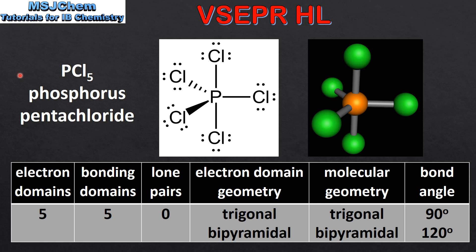Our first example is PCl5, which is phosphorus pentachloride. By looking at the Lewis structure we can see there are 5 electron domains around the central atom. The 5 electron domains are all bonding domains with 0 lone pairs of electrons. The electron domain geometry and the molecular geometry are both trigonal bipyramidal. The bond angles are 90 degrees and 120 degrees.